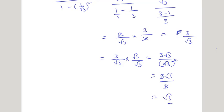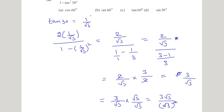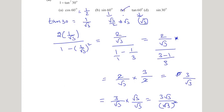Now we check which option equals √3. The first option, cos60° = 1/2, is not equal to √3. The second option, sin60° = √3/2, is also not equal. The third option, tan60° = √3, matches our answer. So the correct choice for this question is Option 3.